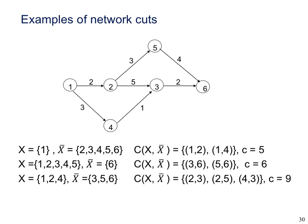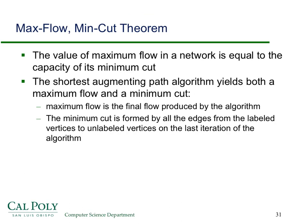We're going to prove the max-flow min-cut theorem: the value of a maximum flow in a network equals the capacity of its minimum cut. The shortest augmenting path algorithm yields both a maximum flow and a minimum cut. The minimum cut is formed by all edges from the labeled vertices to the unlabeled vertices — the partition that determines the cut is labeled vertices versus unlabeled vertices.